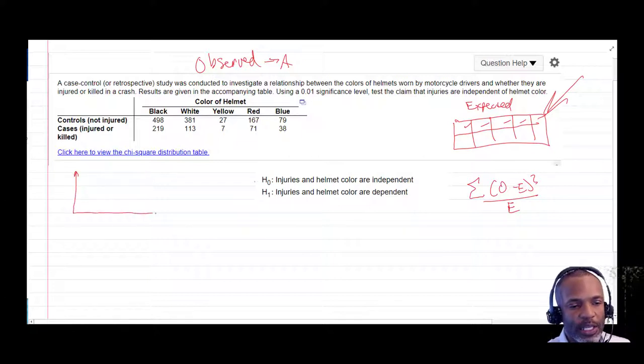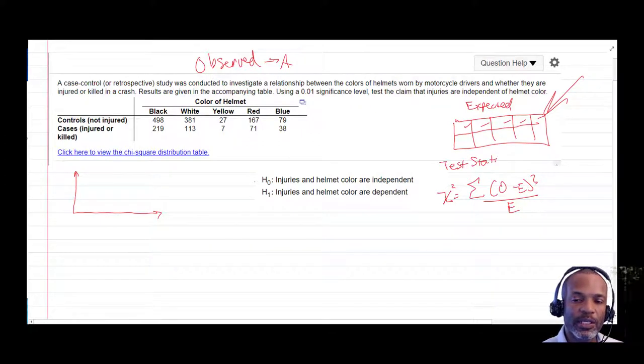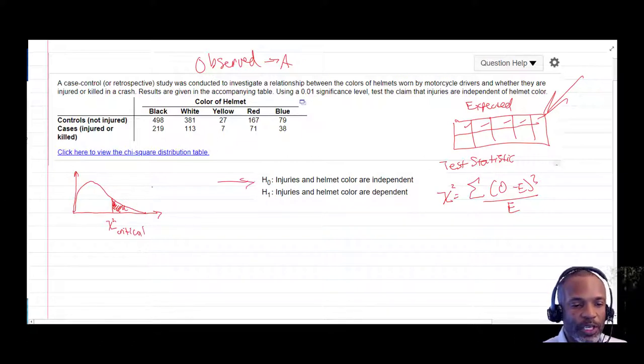And once we get that test statistic here generated from our calculator, we're going to need to compare this test statistic that we get to, I like to call this my kind of rubric. So I need a critical value by which I'll make a decision to reject or not reject my null hypothesis. So what is my critical value? I'm going to have to use my chi-squared table, and I'll have to go in at alpha equals 0.01. And my degrees of freedom will be R minus 1 times the number of rows minus 1 times the number of columns minus 1.